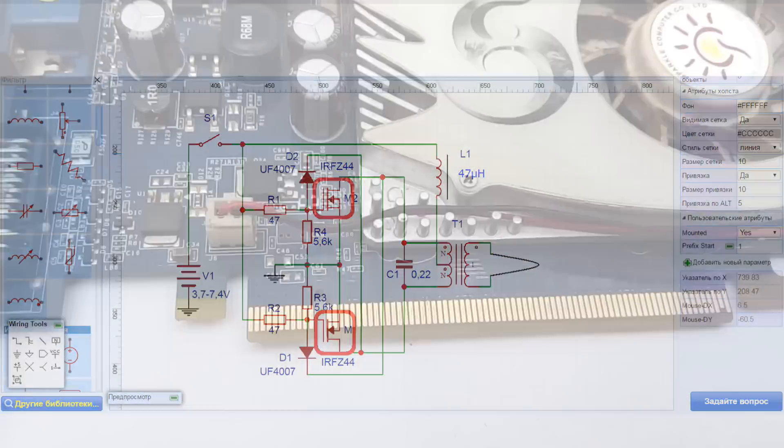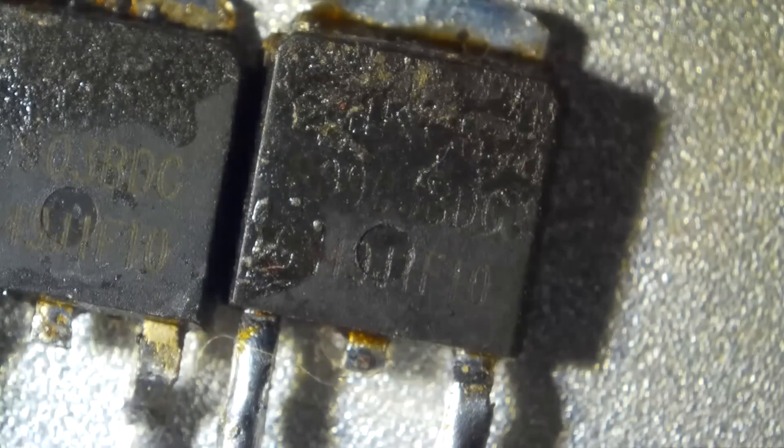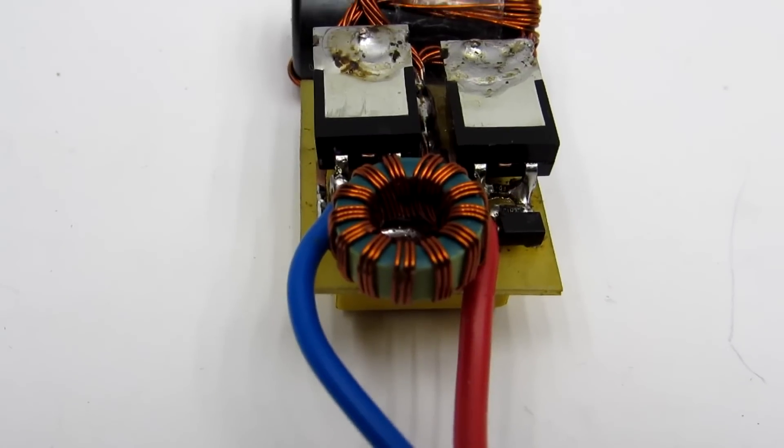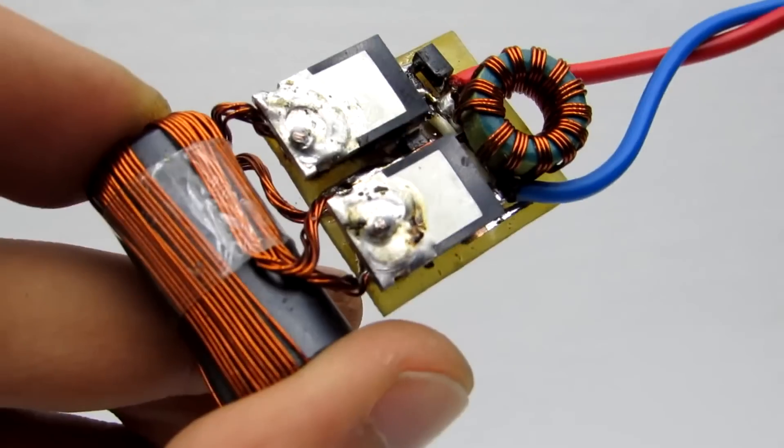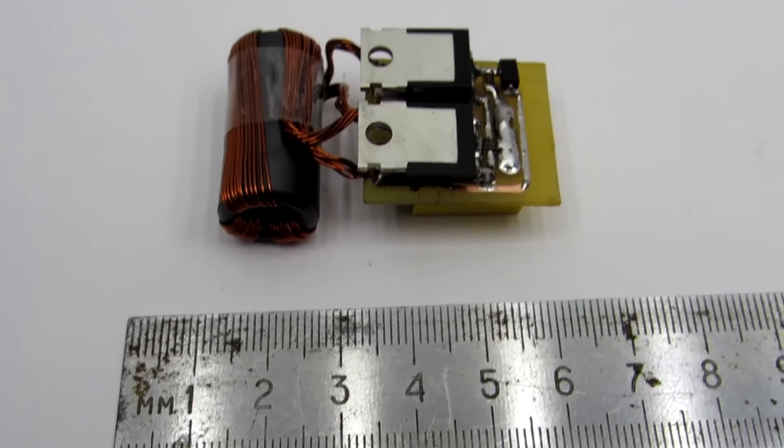Transistors are also taken from a video card. They are good because they have a low response voltage, about 2 to 2.5 volts. Originally, the circuit was intended to be powered by one lithium battery. But then, in the pursuit of more output, I fed it from two batteries connected in series. And the transistors were instantly burned.